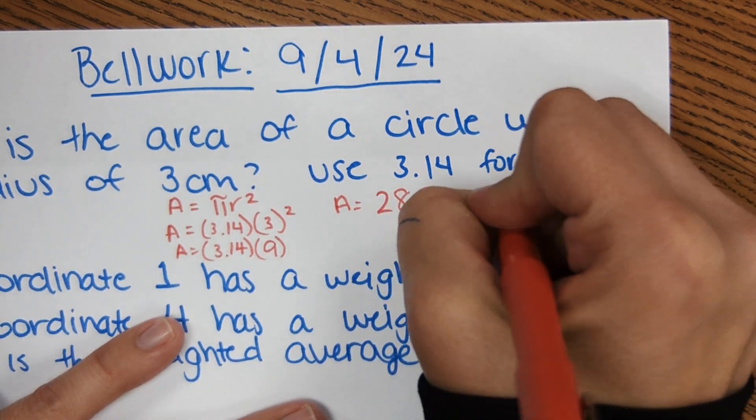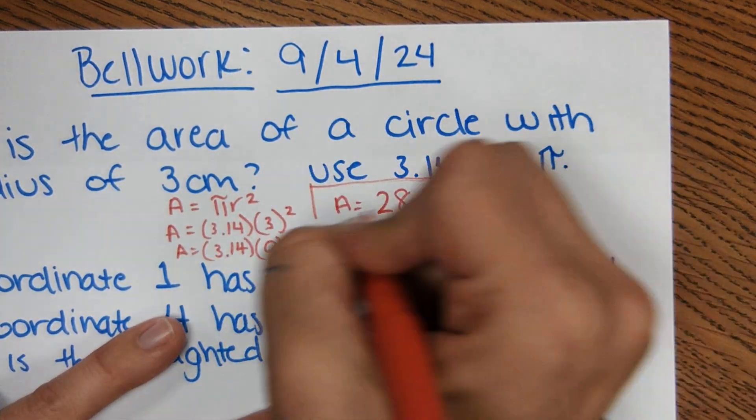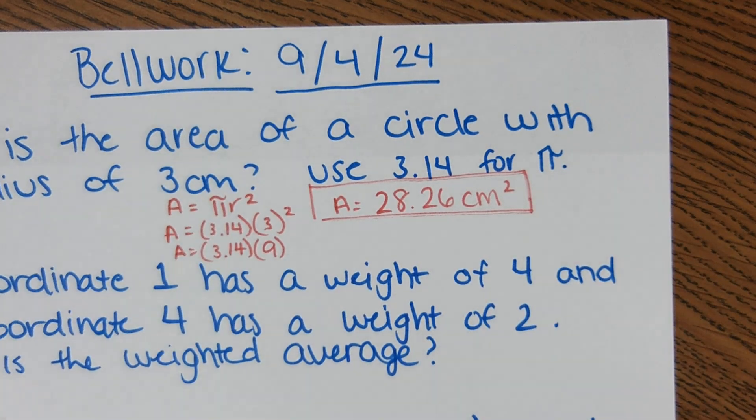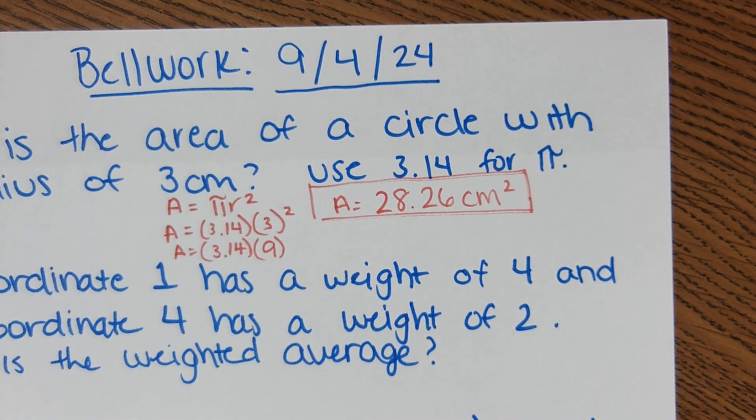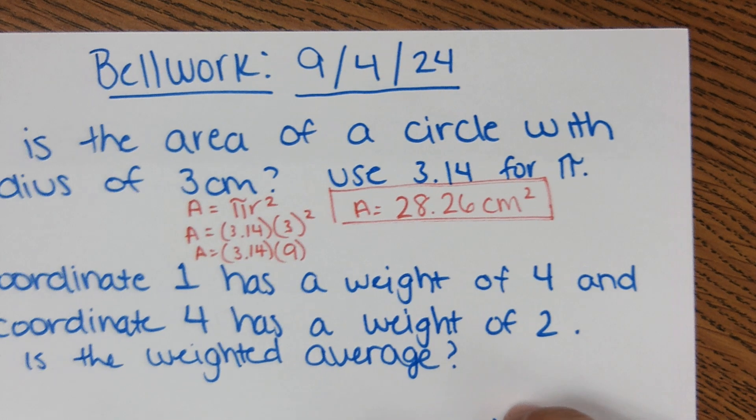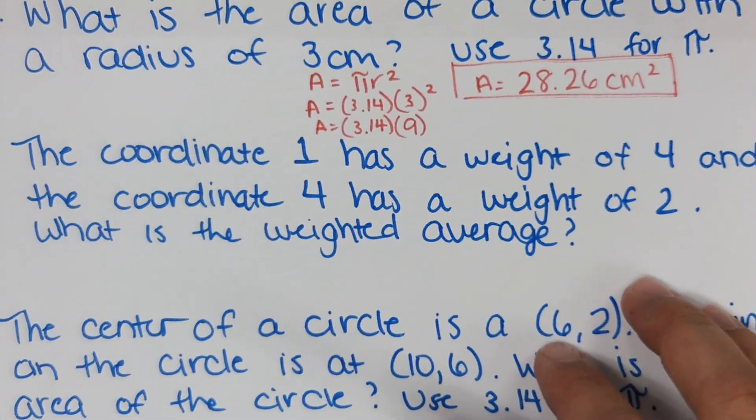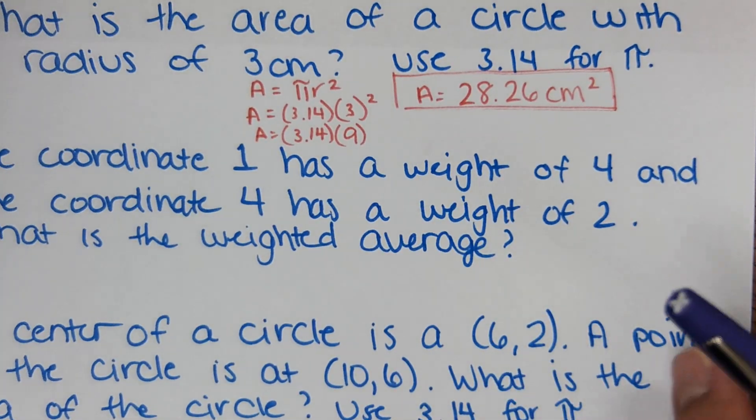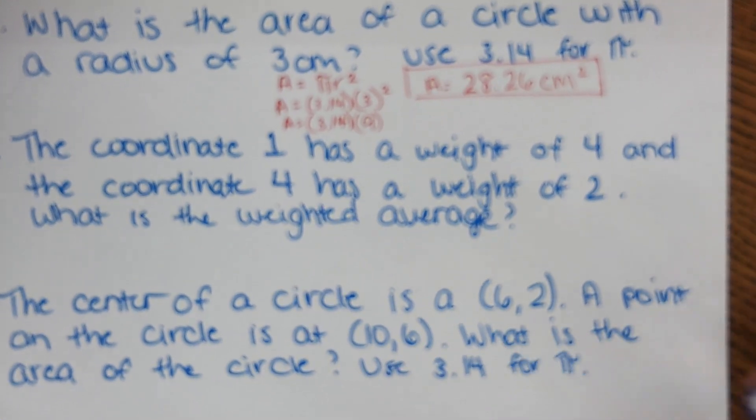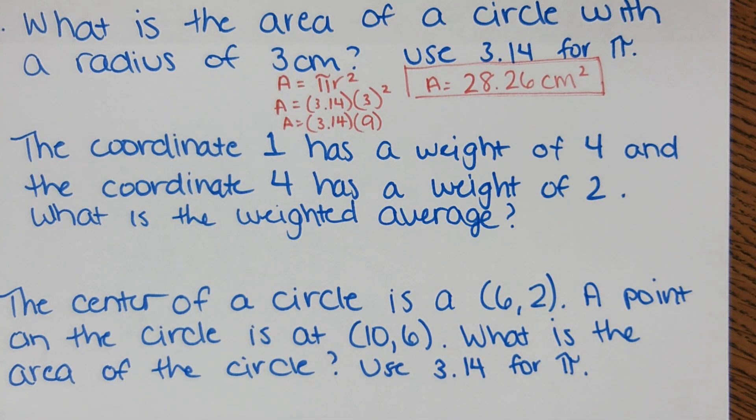Since this is area, it is centimeters squared. Okay, the next one goes along with what you worked on on Friday. A lot of you got full credit on homework, but I know sometimes you need a little bit more practice just to get it solid in your brain. It says coordinate 1 has a weight of 4 and coordinate 4 has a weight of 2. What is the weighted average?